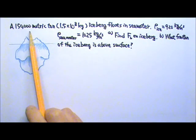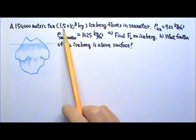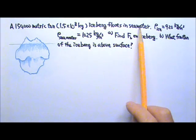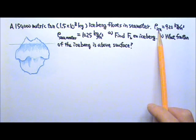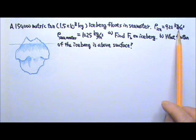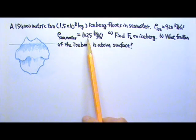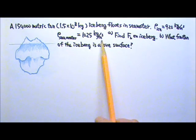A 150,000 metric ton or 1.5 × 10^8 kilogram iceberg floats in seawater. The density of ice is 920 kilograms per meter cubed. The density of seawater is 1,025 kilograms per meter cubed.